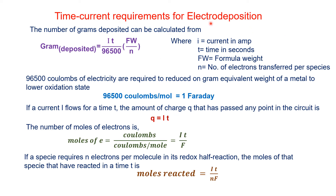For time-current requirements of electrodeposition, the number of grams deposited can be calculated using the formula: grams deposited = (i × t / 96500) × (formula weight / n), where i is the current in amperes, t is the time in seconds, FW is the formula weight, n is the number of electrons transferred per species, and 96500 is the Faraday constant. This formula is derived from Ohm's law, Faraday's first law, and Faraday's second law.